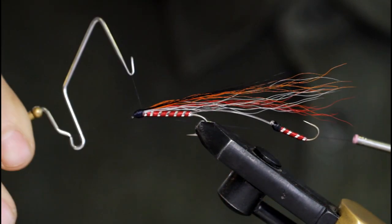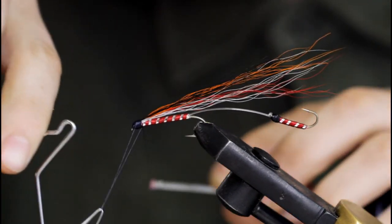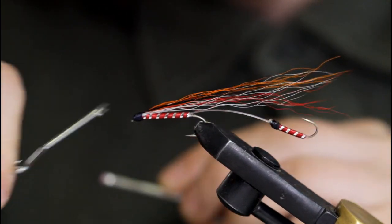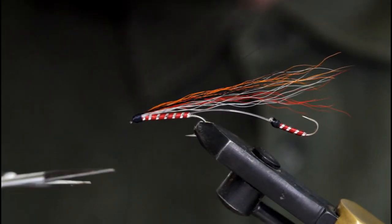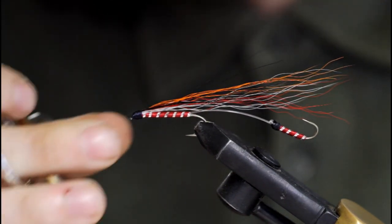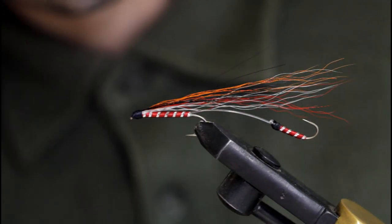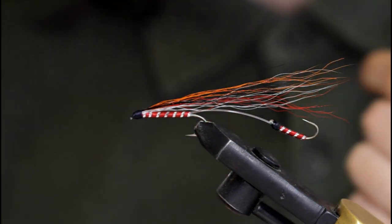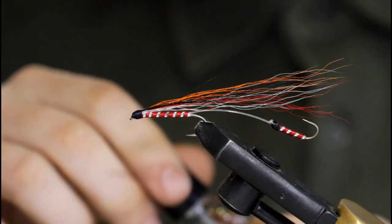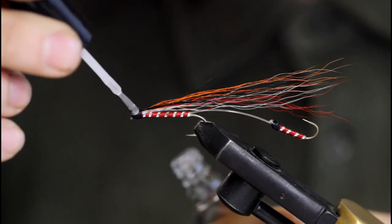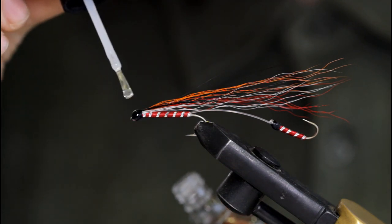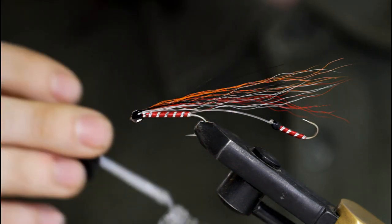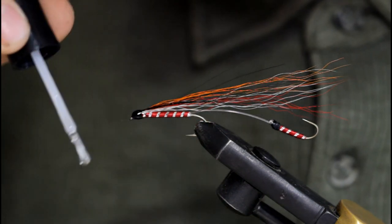And of course you have to build up enough of a head here so that you can paint your eyes on. So that looks good to me. I'm going to tie it off, whip finish, and snip it off. All right, so now I'm just going to put a coat of Sally Hansen's on and this is just going to help even out the grooves in the thread so that I can evenly apply my painted eyes. Now I'm going to let this dry.